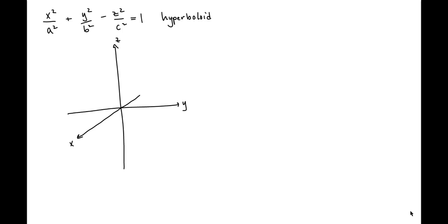To begin, let's look at the traces. The traces of the surface described by this equation can be used to help us identify the shape we're dealing with. Let's start with the yz trace. The yz trace is given by the line of intersection between a plane that is parallel to the yz plane such that its normal vector is parallel to the x axis.